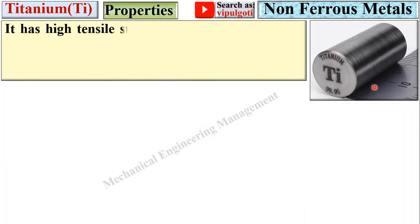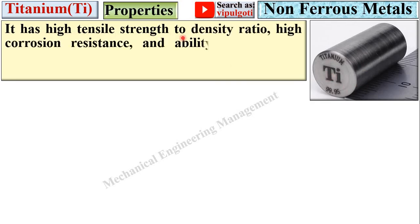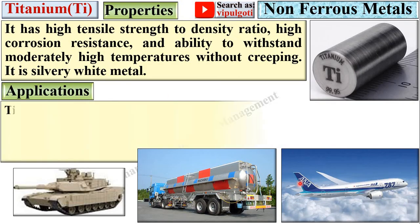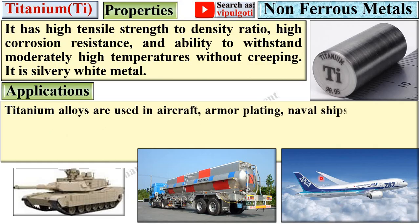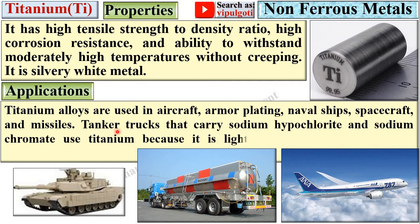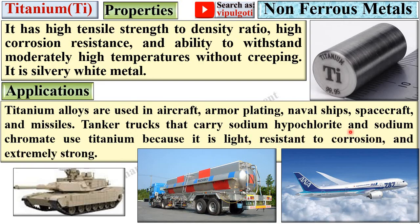Next, titanium. Here you can see a specimen of titanium. It has a high tensile strength to density ratio — a special characteristic of titanium. It also has high corrosion resistance and the ability to withstand moderately high temperatures without creeping. It is a silvery-white metal. Applications: titanium alloys are used in aircraft, armor plating, naval ships, spacecraft, and missiles. Tanker trucks carrying sodium hypochlorite and sodium chromate also use titanium because it is light, resistant to corrosion, and extremely strong.